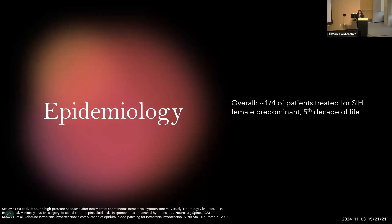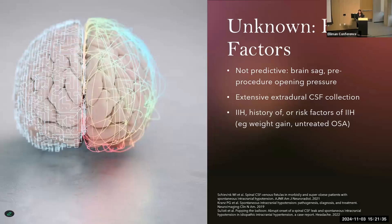What we are currently estimating is that about a fourth of patients treated for SIH develop RIH, and there is a female predominance. It usually occurs in the mid-40s, which tracks along with the incidence of SIH. But what we don't really know is why some people experience RIH and why some people don't. It doesn't seem that brain sag or pre-procedural opening pressure are risk factors. Some risk factors we have found include extensive extradural CSF collections, IH, or a history of RIH.